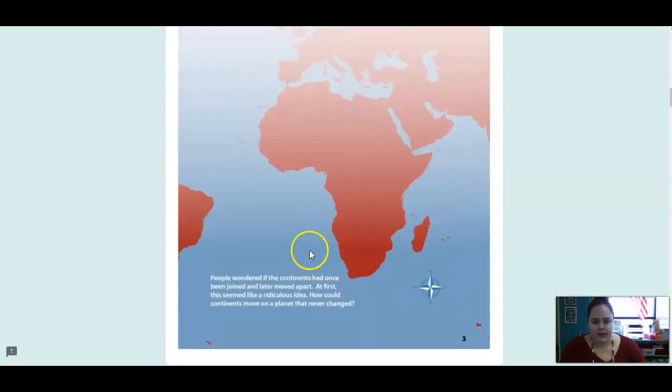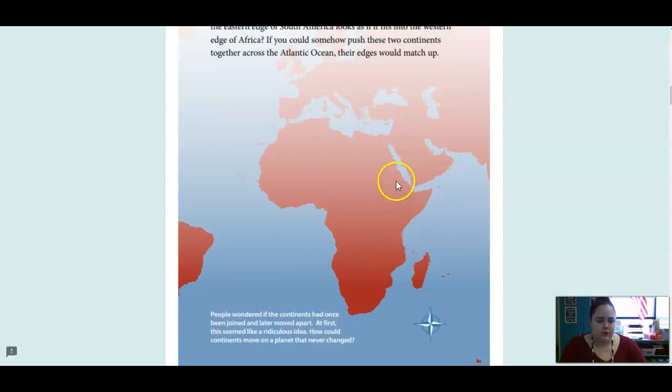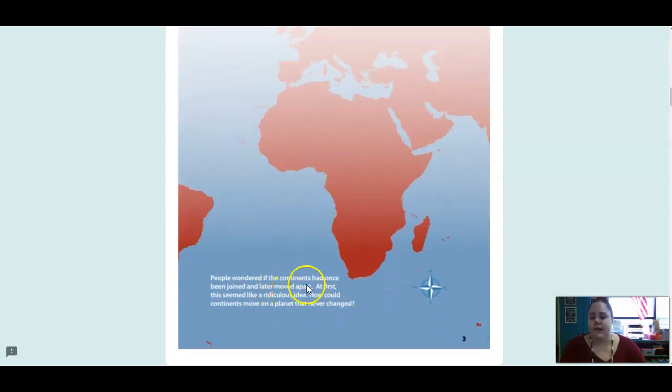And this is showing the continent. So here is Africa. And you can see that this part matches up perfectly with this part right here. So people are wondering if the continents had once been joined and then later moved and spread apart. At first, this seemed like a ridiculous idea. How could the continents move on a planet that never changed?